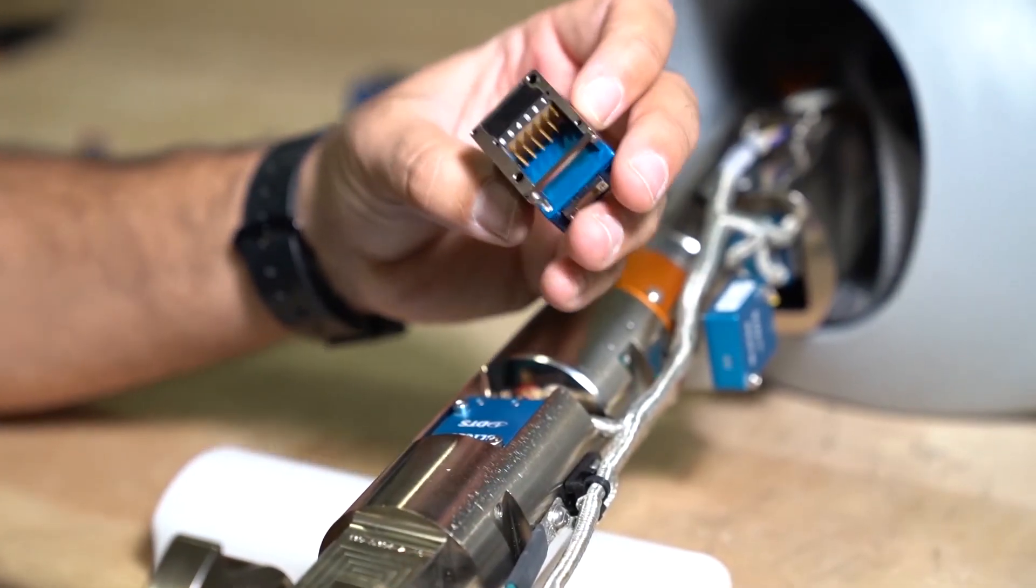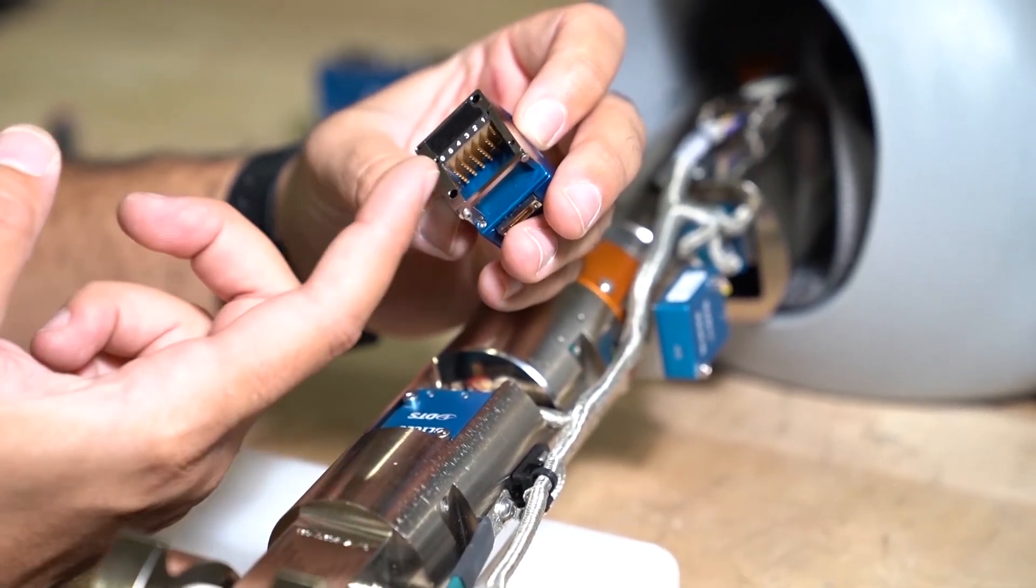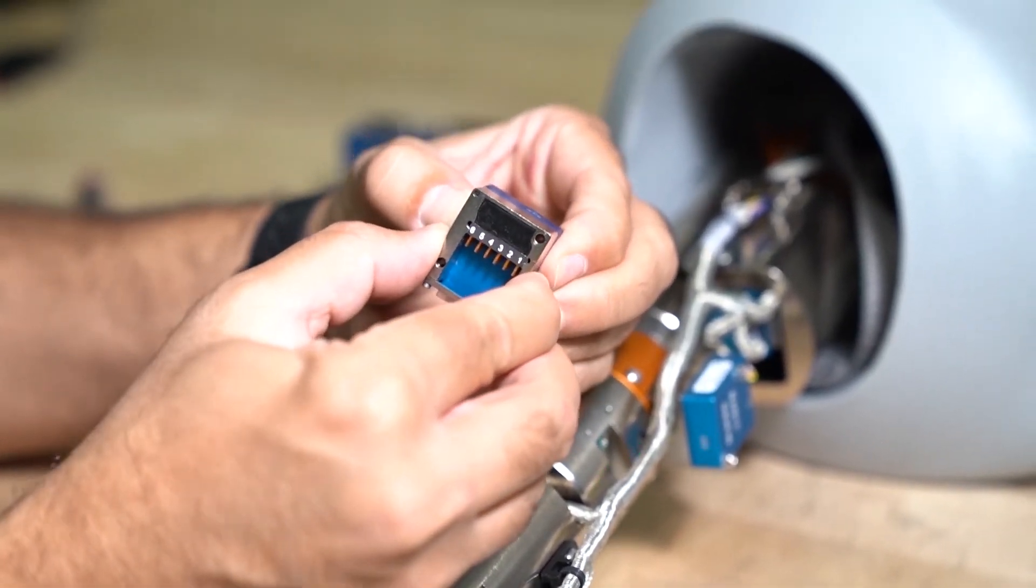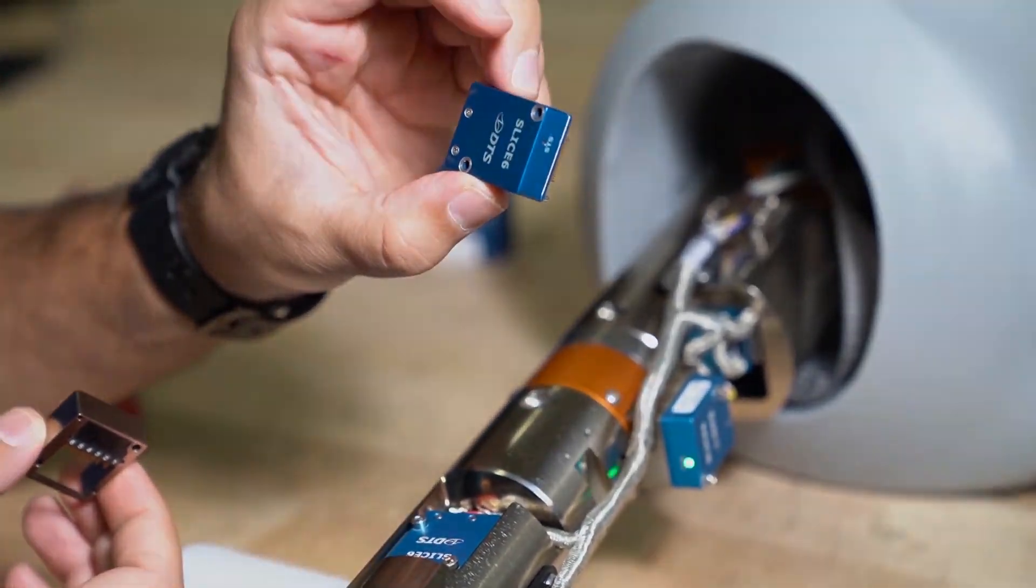So much like the direct mount option, the sensor interface is easily removable from the Slice 6 for calibration and replacement.